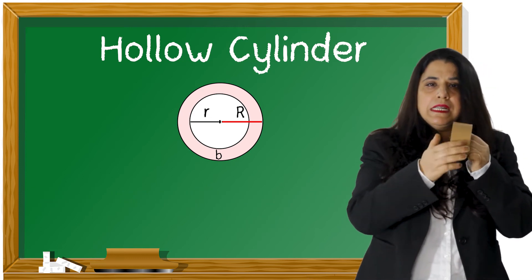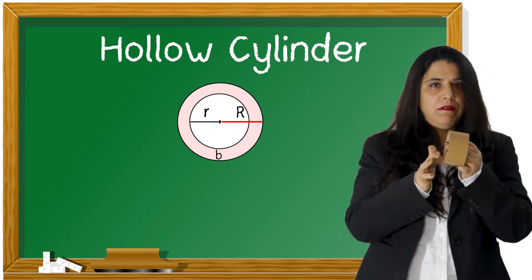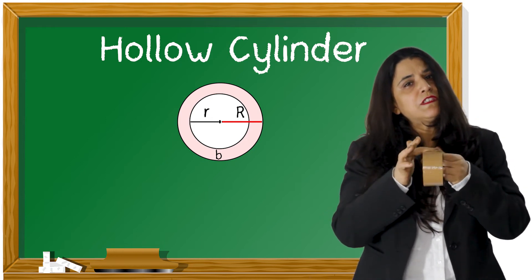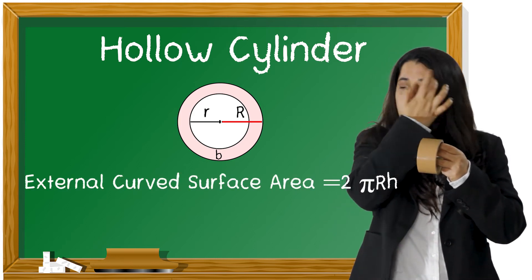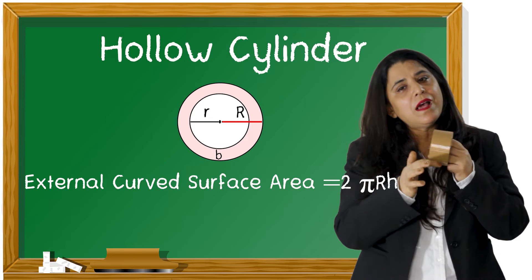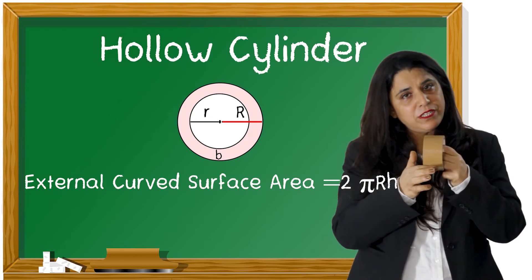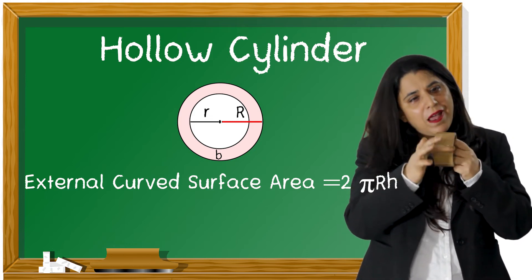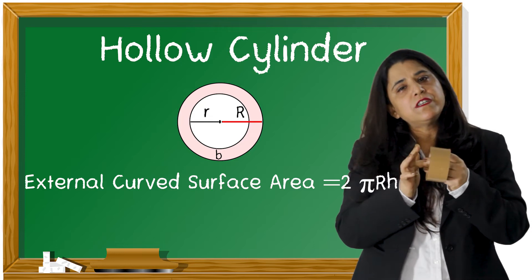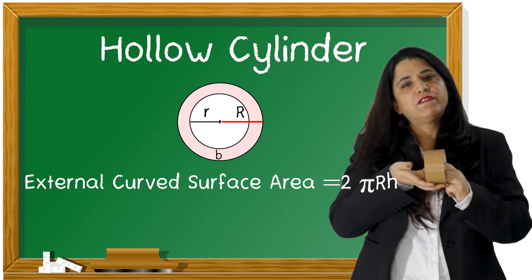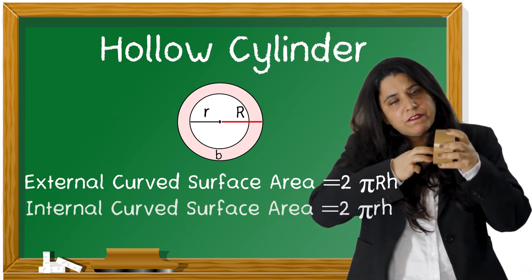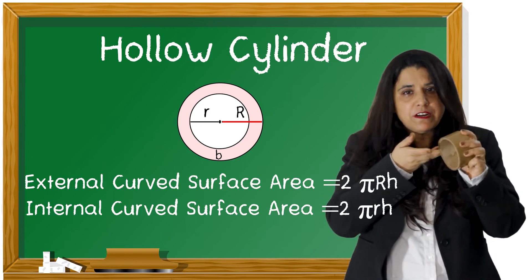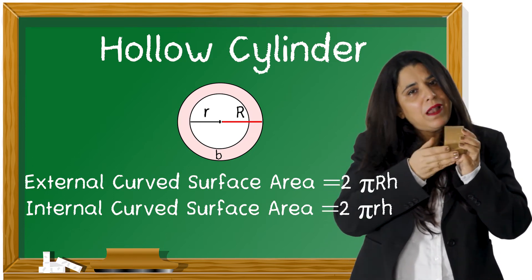Now what is external curved surface area? The external curved surface area is the outer brown part. We have studied in our previous video: it is 2 pi capital R into H. Here capital R represents the external radius and small r represents the inner radius. So 2 pi capital R H will give you the external curved surface area.